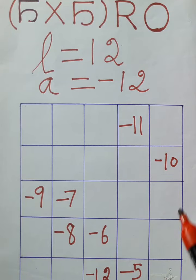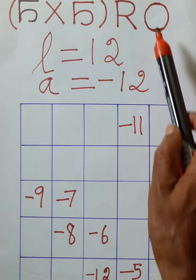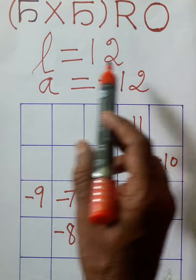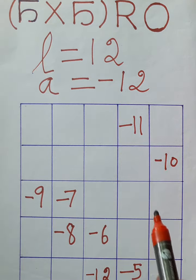This table, 5 by 5, the sum of any direction is 0. That is, result is equal to 0. 5 by 5 plus 12 is equal to 12. Last time l is equal to 12, then subtract 24 from this 12.